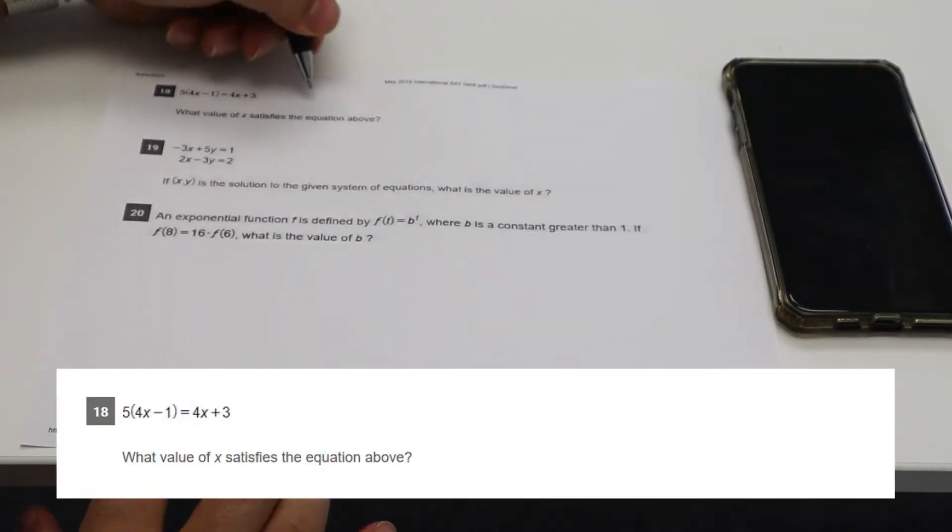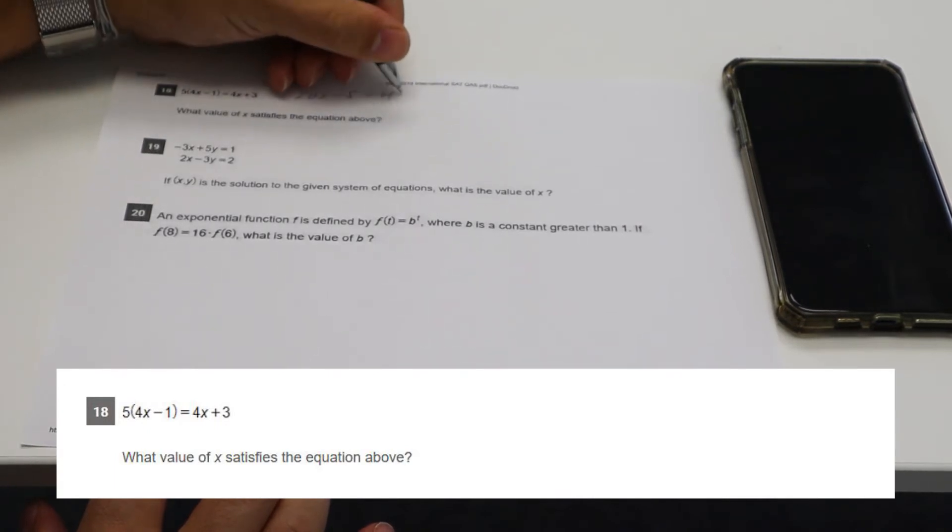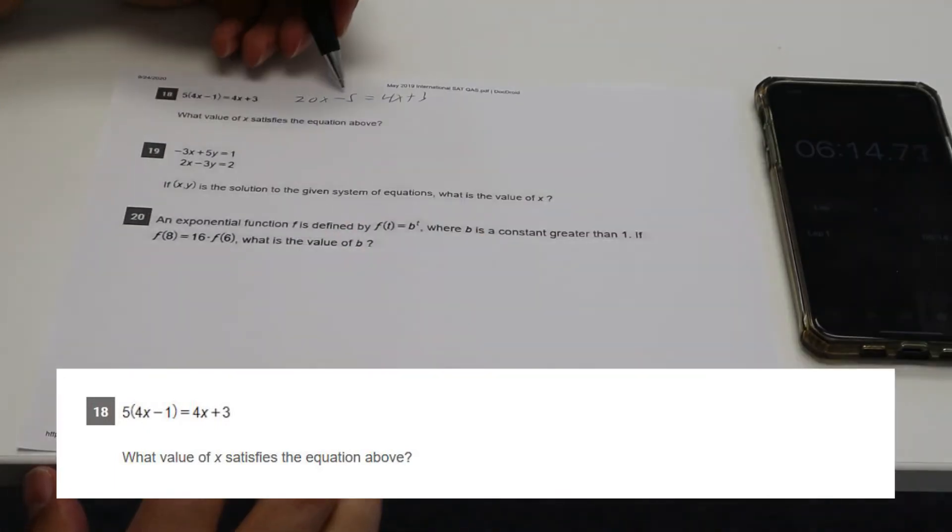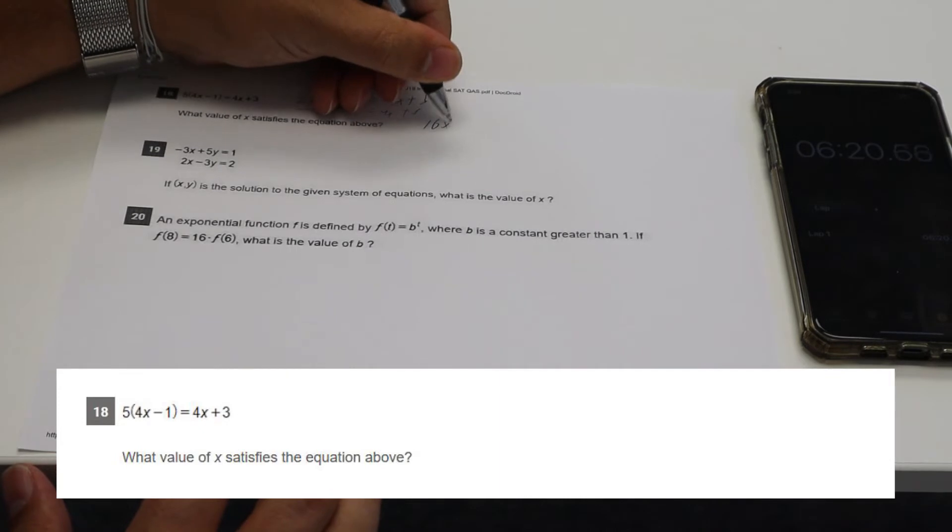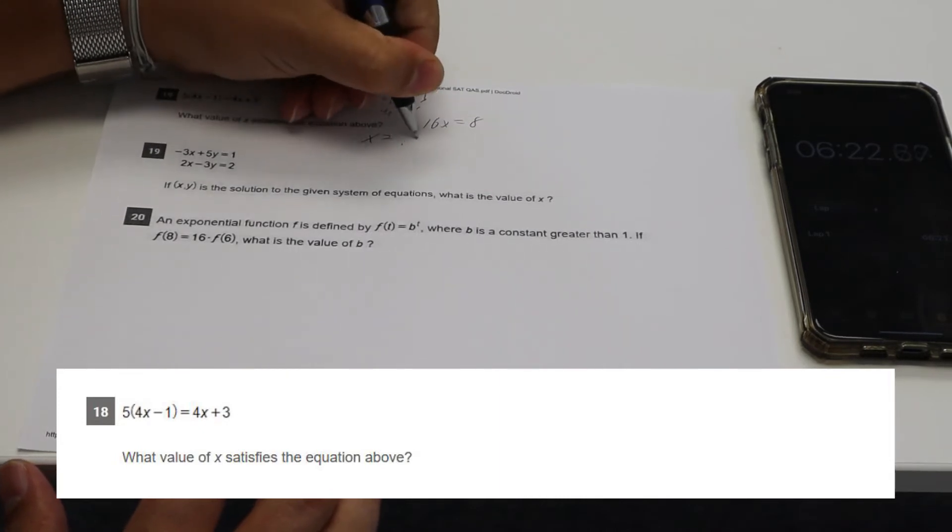Another region, solve for X. Okay. 20 X minus five equals four X plus three. 20 X minus five, four X plus three, minus four X minus four X. 16 X equals eight, X equals 0.5.